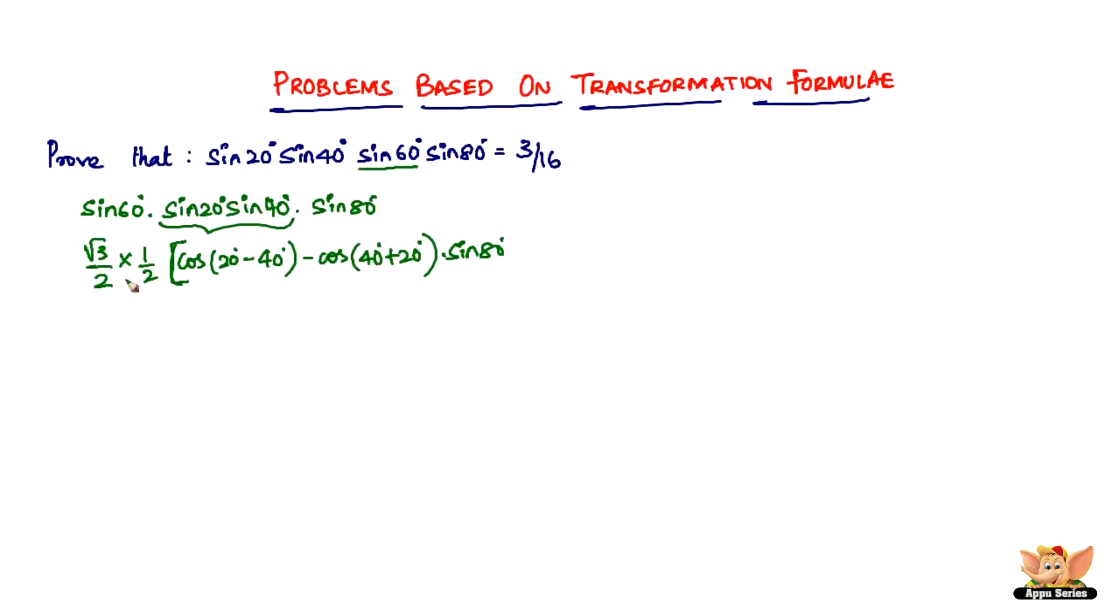So now that we've got this, let us proceed to the next one. Usage of brackets is really important. √3/2 is going to become 4, so √3/4 times cos(-20°) is cos 20° itself. So cos 20° minus cos 60° times sin 80°. The best part is we've got cos 60° which is a standard angle.